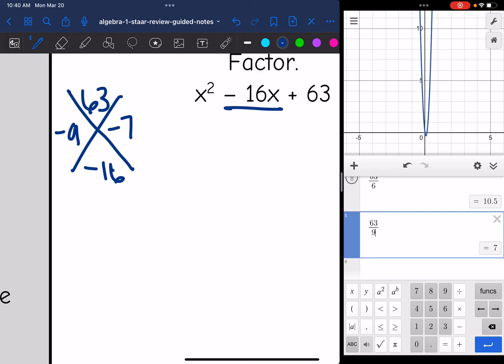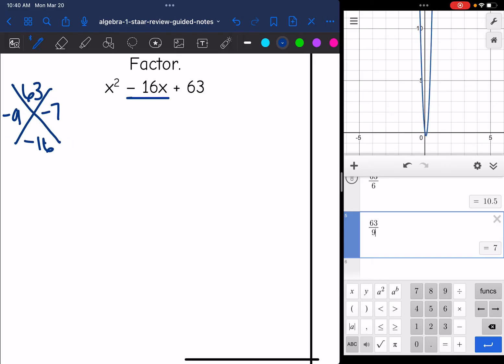You could split this up into negative 9x minus 7x and group if you wanted to, but we don't need to since it's just a basic trinomial. I can jump to my factors, which are going to be x minus 9 and x minus 7.